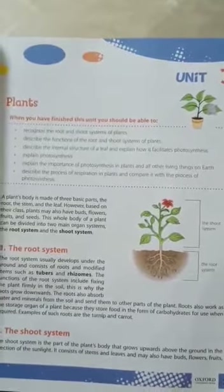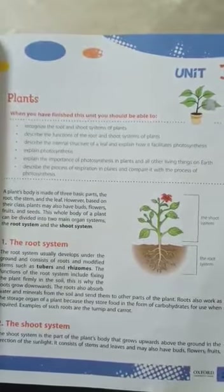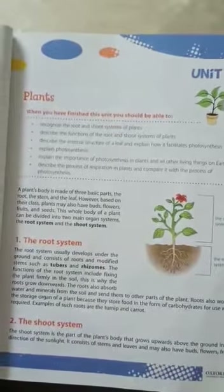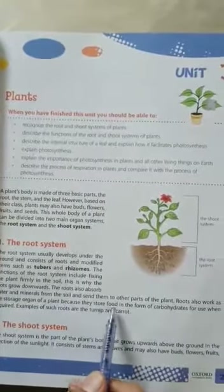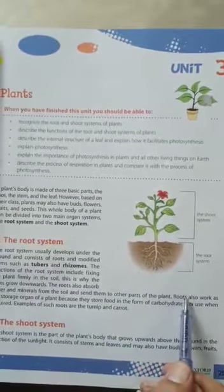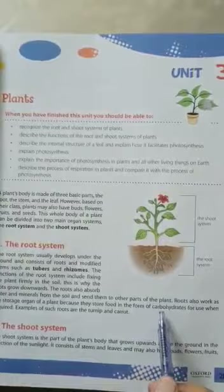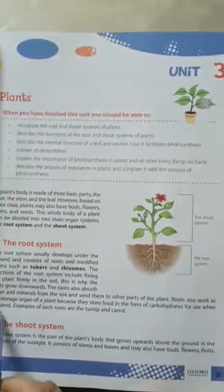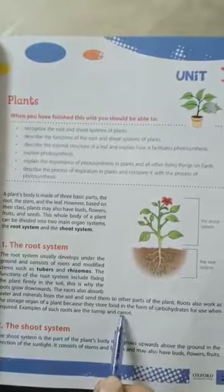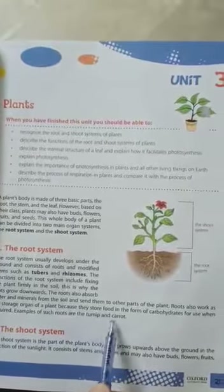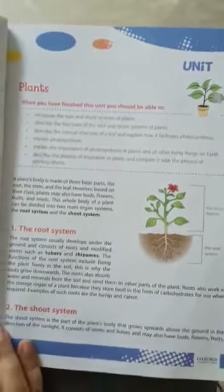Root kaisa organ hai plant ka? Storage — yani zakhira — boh te hai, matlab store karke rakhta hai food ko of the plant, because they store food in the form of carbohydrates for use when required. Examples of such foods are turnip and carrot.